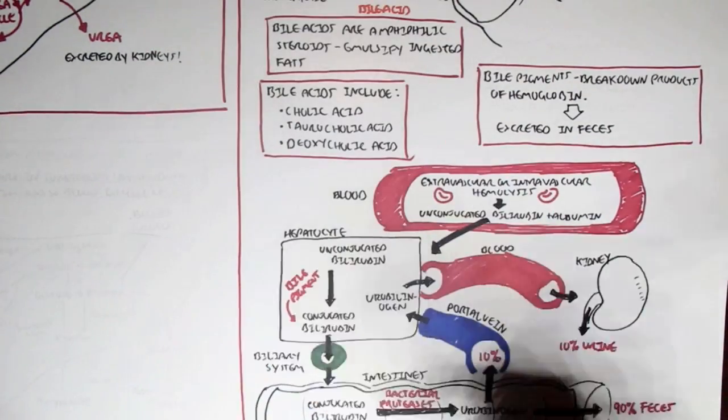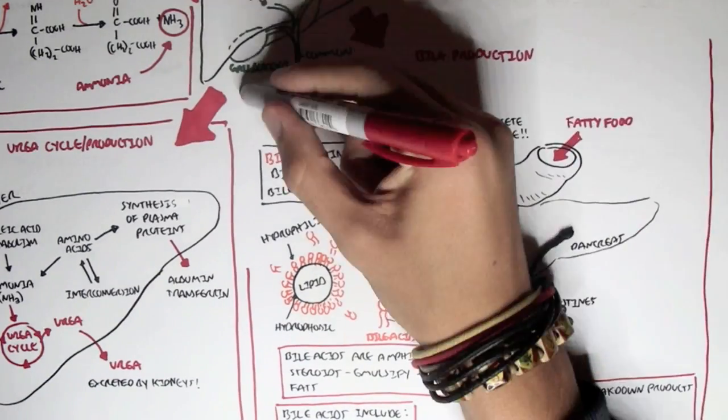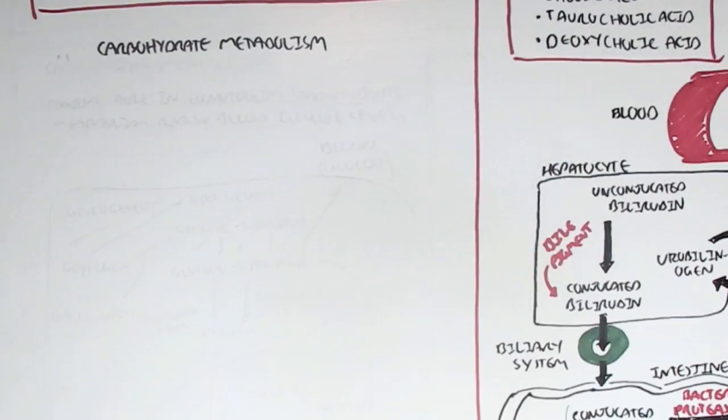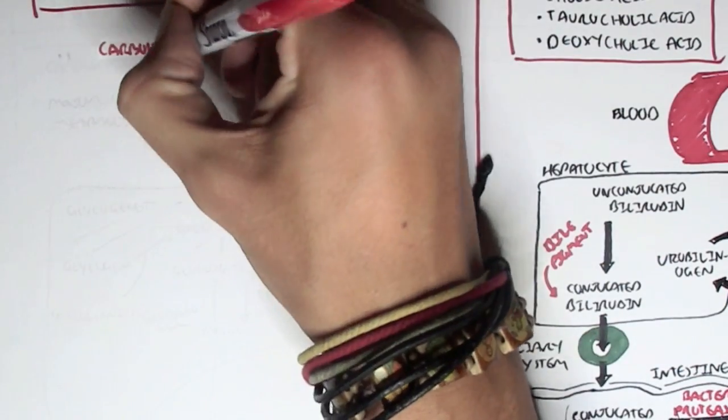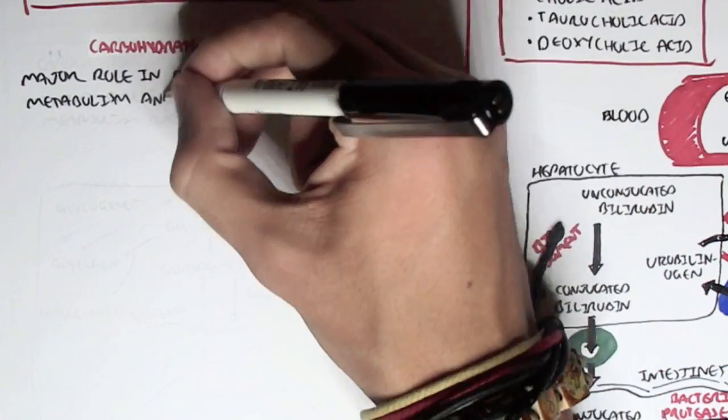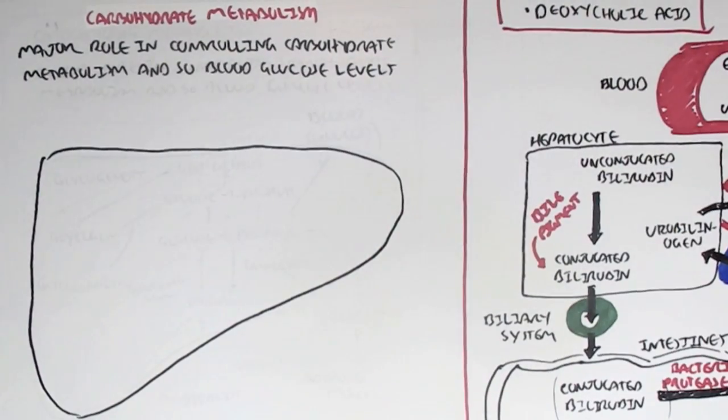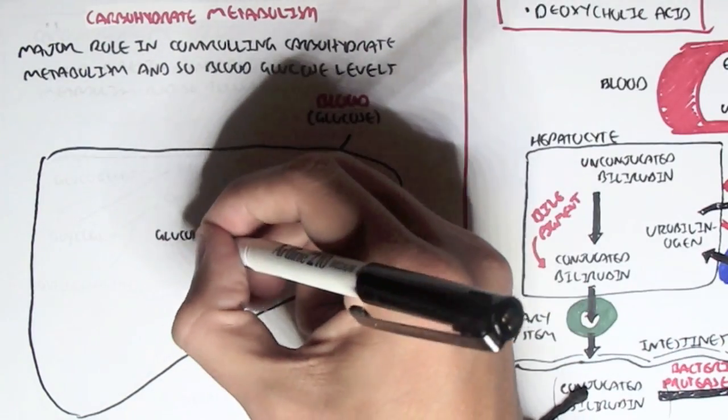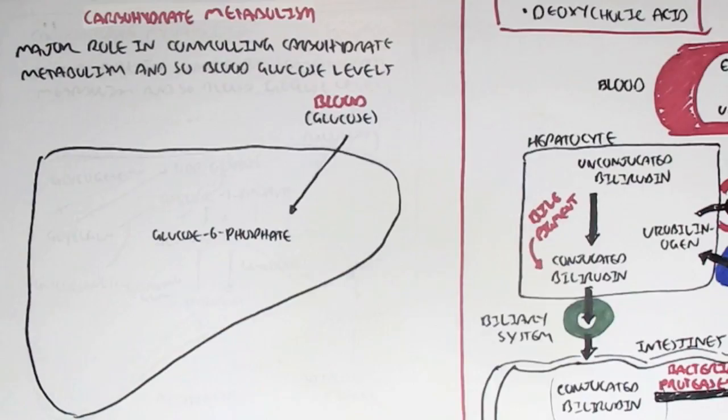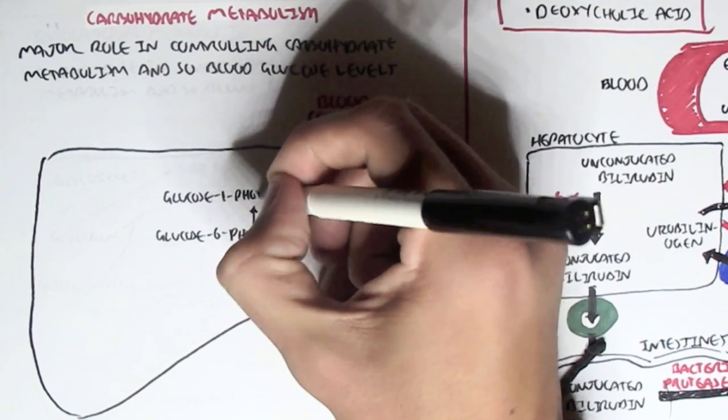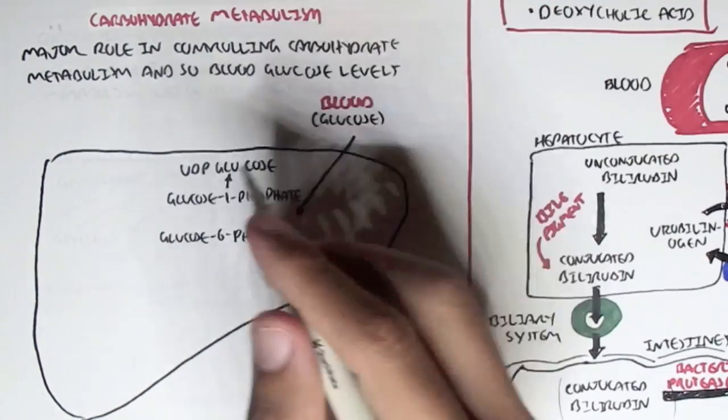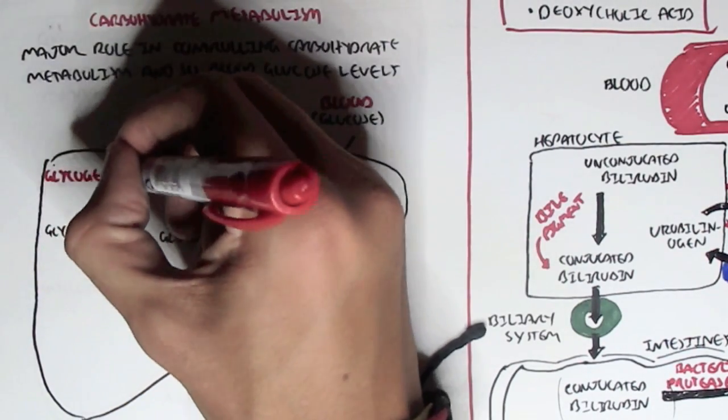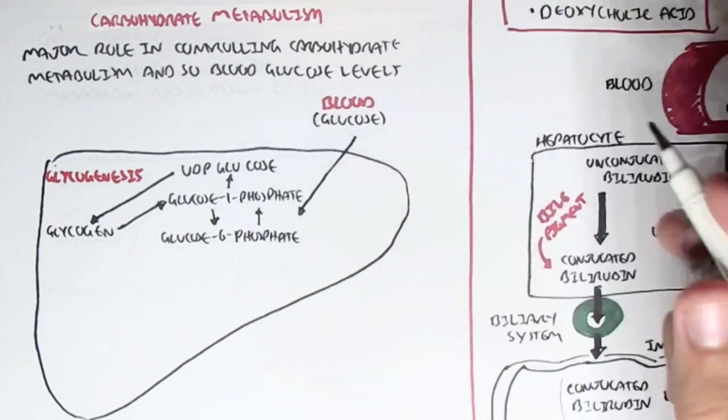The other function the liver does is that it also performs carbohydrate metabolism. The liver has a major role in controlling carbohydrate metabolism and so blood glucose levels as well. For example, after we eat, glucose will get absorbed by the liver. It will get converted to glucose 6-phosphate then glucose 1-phosphate and then UDP glucose and then it will get converted to glycogen. This whole process is known as glycogenesis, the synthesis of glycogen. Glycogenesis would happen if blood glucose levels are high.